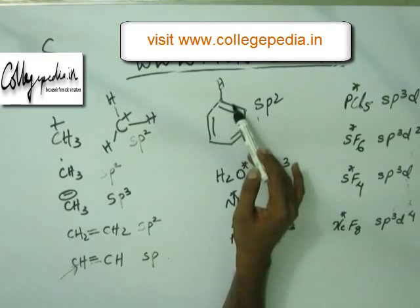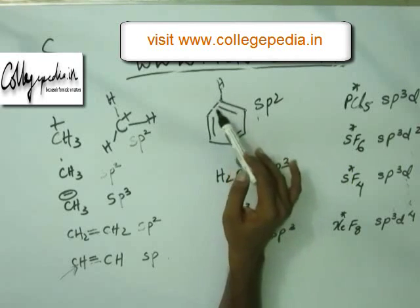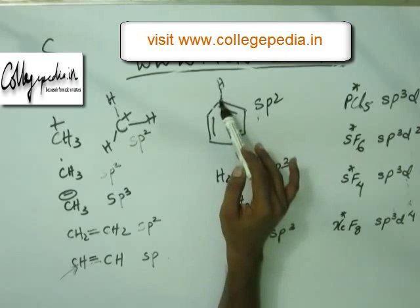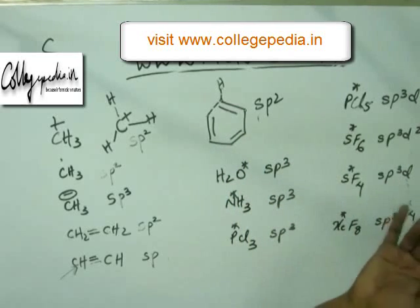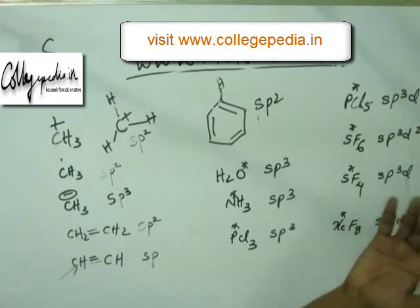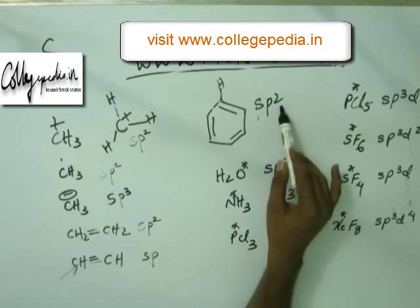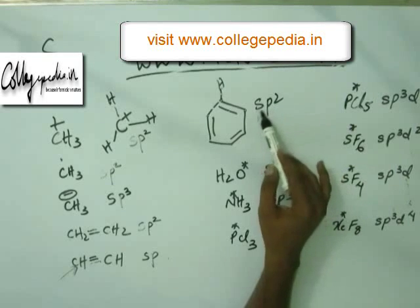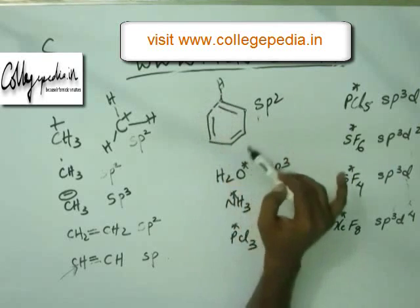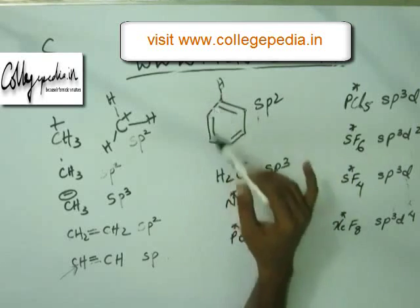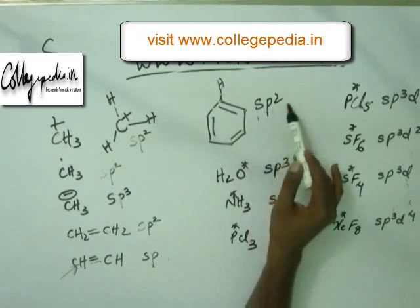There is only one bond here, so that will be sigma. Altogether there are only three sigma bonds for this carbon. For three sigma bonds you require three hybridized orbitals; mix three pure orbitals — one s and two p — so we write it as sp2. The hybridization state of this starred carbon is sp2. This compound happens to be benzene — an important compound you must know. The hybridization state of carbon in benzene is sp2.